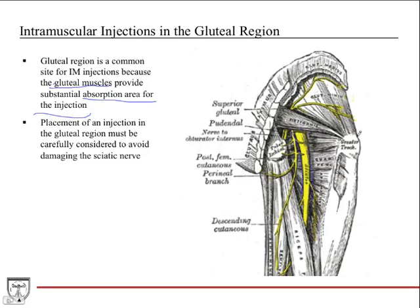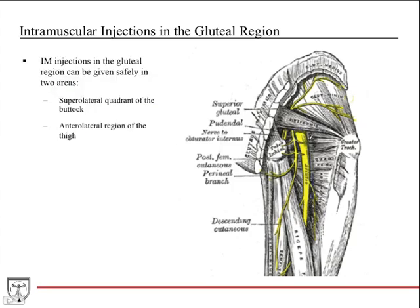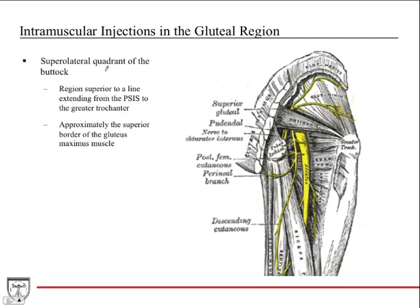The sciatic nerve runs in close proximity to these muscles, as the gluteus maximus comes over the top. IM injections in the gluteal region can really be given in two places: the superior lateral quadrant of the buttock, and the anterior lateral region of the thigh. The superior lateral quadrant is the region superior to an imaginary line extending from the PSIS — posterior superior iliac spine — down to the greater trochanter. Roughly speaking, it's approximately the superior border of the gluteus maximus muscle, and an injection placed in this region will not risk hitting the sciatic nerve.